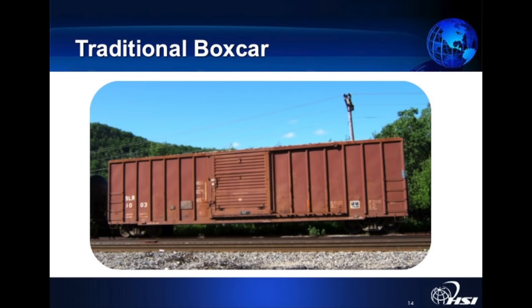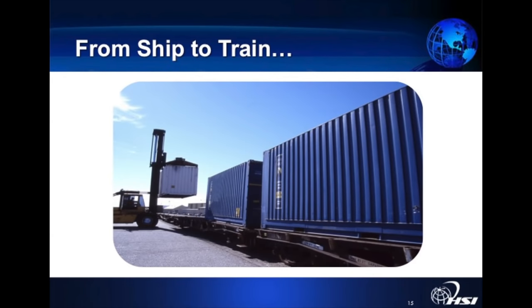A traditional boxcar has one simple door and everything must be loaded and unloaded manually. The more humans touch something, the greater the chances of damage, breakage, or pilferage, and it slows everything down. When goods are damaged, multiple people may be involved and accountability is harder. A multi-modal system where a container leaves the factory with a sealed lock and arrives at the client's premises with the seal intact means no one has been inside since manufacture — a great way to provide security. Here's a simple example of taking a container from a ship and immediately placing it on a train in a multi-modal environment.